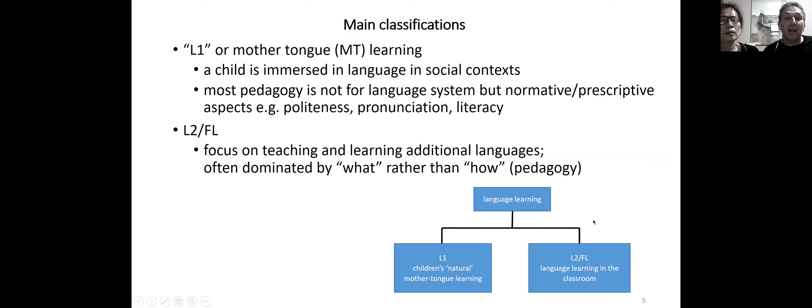The main classifications: L1, or mother tongue learning. We want to point out that children learn their mother tongue immersed in language in social contexts, but the context can be quite constrained. Children will acquire language quite perfectly in a relatively isolated nuclear family. The explicit pedagogy in L1 learning is generally not for the language system itself, but for normative aspects such as politeness or standard pronunciation. Second language and foreign language, of course, are categories where people learn additional languages, but they're often dominated by the rather scattergun what of content rather than the how or the methodology.